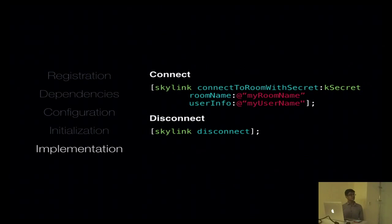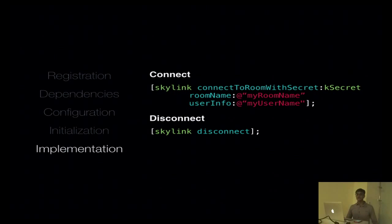The room name is just a string that defines the connection — it's a unique string. The user info can be three variables: it can be a string, it can be an array, or it can be a dictionary. The dictionary allows you to add additional values such as the first name, last name, and any other parameters that you might need to pass in your app. And you disconnect as such.